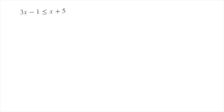Let me move this question to the side. The inequality is 3x minus 1 less than or equal to x plus 5. The whole idea behind solving this inequality is to gather all the terms without an x — in this case the 1 being subtracted and the 5 being added — on one side, and all the terms with an x, that would be 3x and x, on the other side.